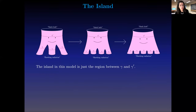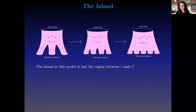This model involves an island — a quantum extremal island — which is just the region between γ′ and γ. Just as before, after the jump the entanglement wedge of the Hawking radiation contains the entire interior, while the CFT that was evaporating contains very little of it. This is very reminiscent of the island phenomenon.